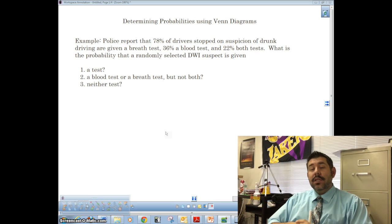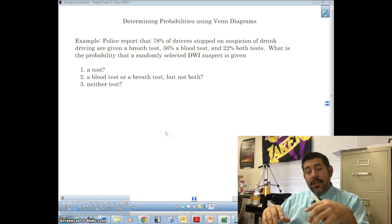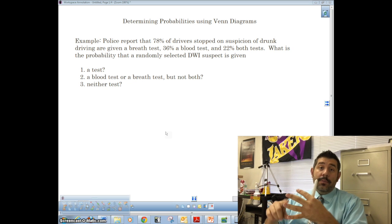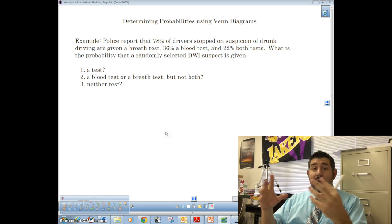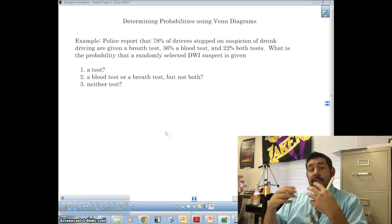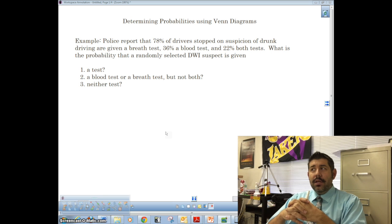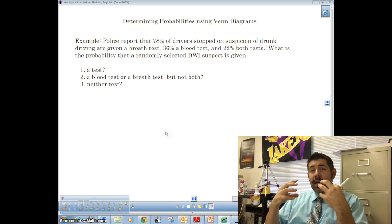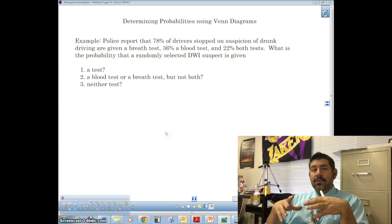So in class we discussed how to determine basic probabilities using the addition rule, the multiplication rule, make sure they're independent. And a lot of those were disjoint probabilities. And what happens if, especially with the addition rule, we have to have the two events to be independent, or I'm sorry, disjoint in order for us to use the addition rule, independent for us to use the multiplication rule.